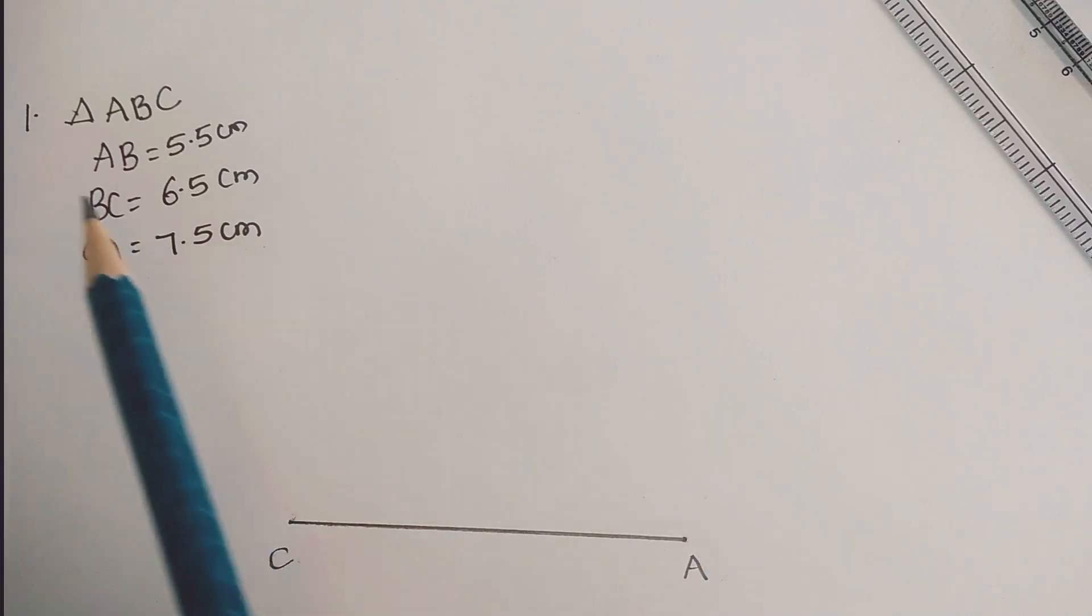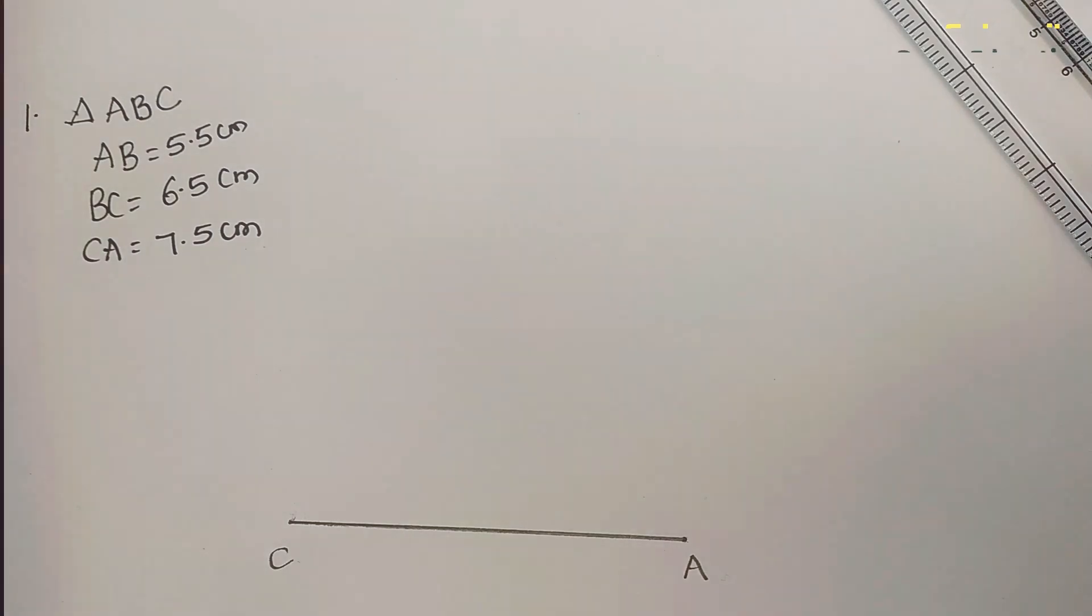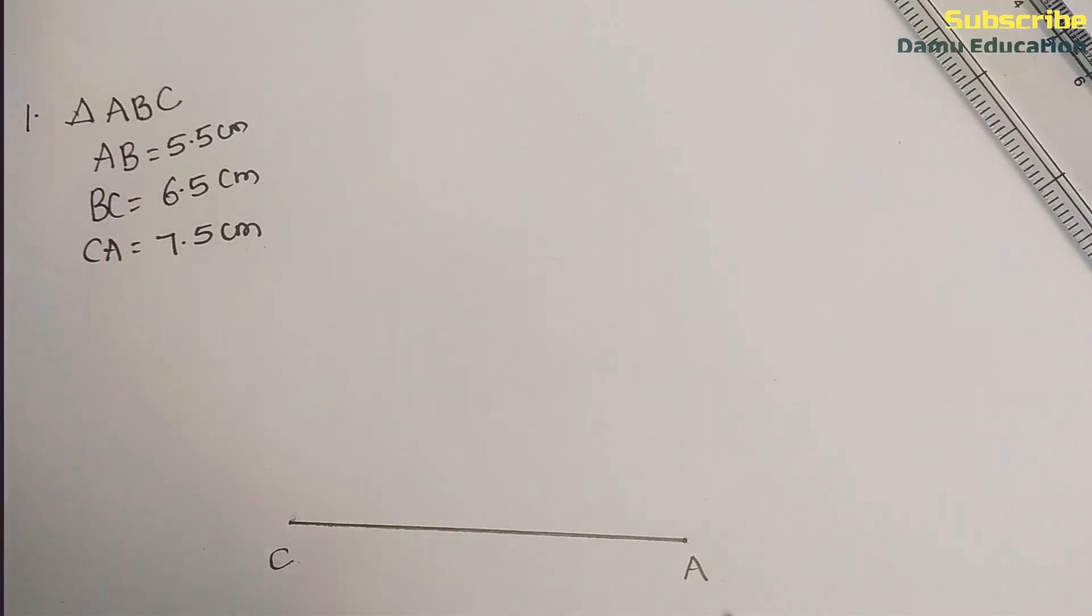Let's start the construction. We'll begin by drawing line CA, then draw arcs from the vertices. First, let's draw CB which is 6.5 centimeters.